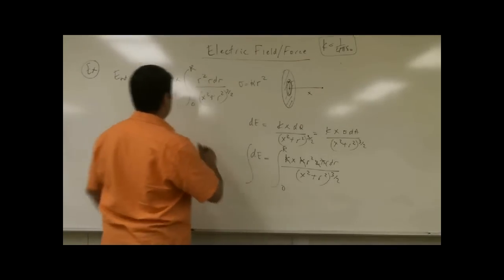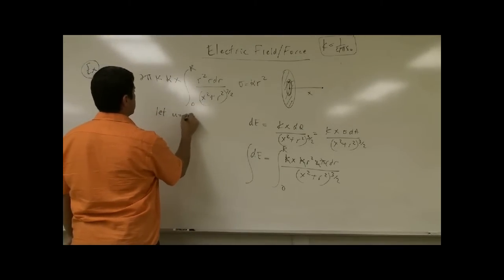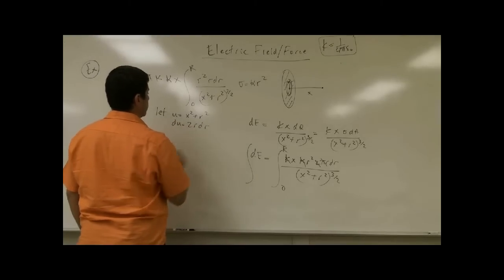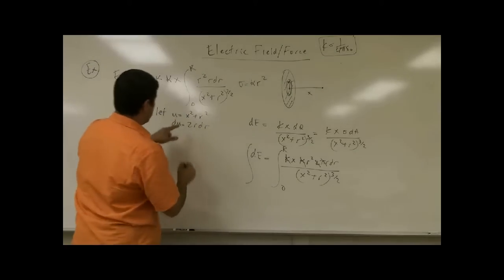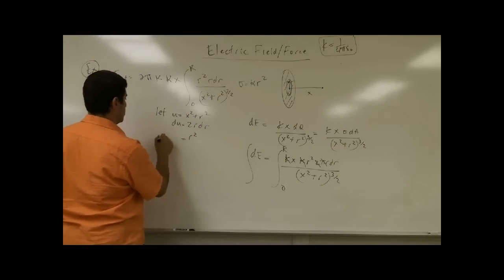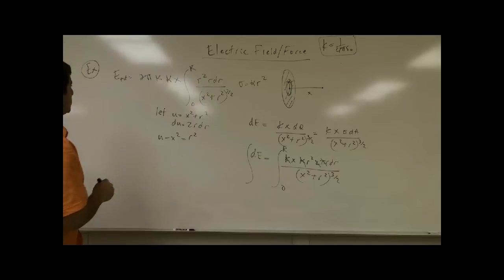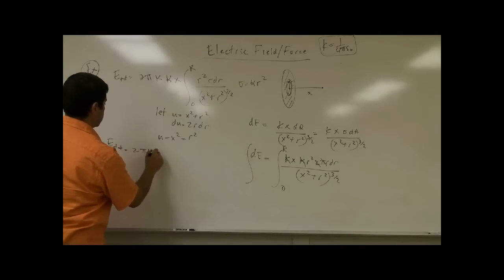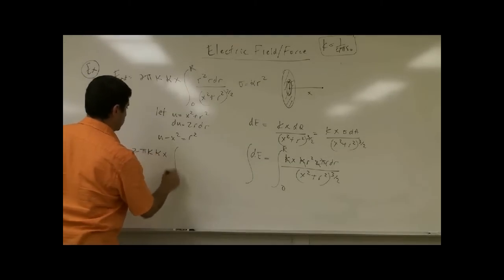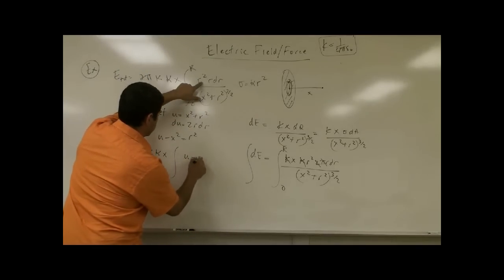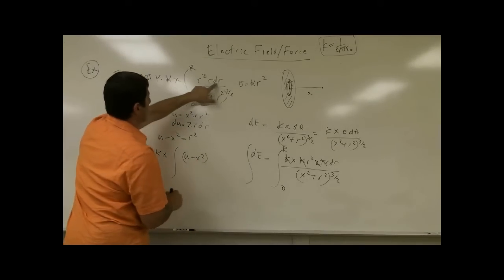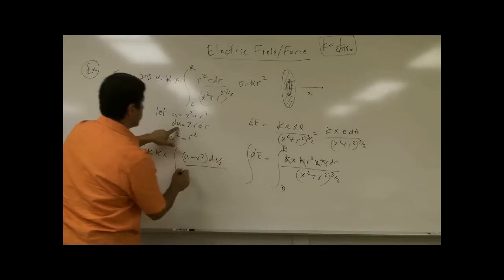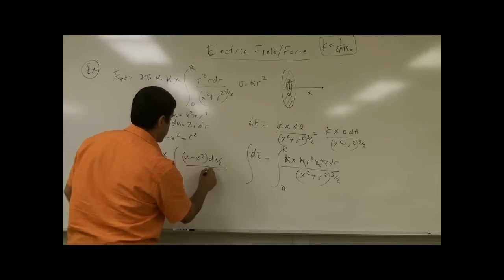We can use simple substitution: let u equal x squared plus r squared, so du equals 2r dr. There is an extra r squared here, and r squared will be u minus x squared.